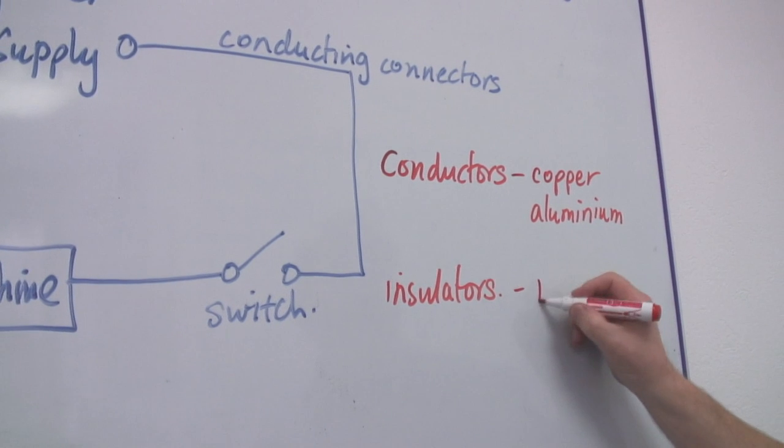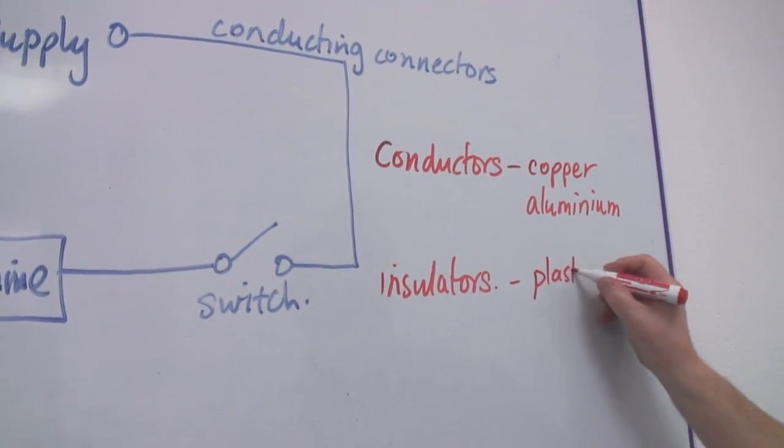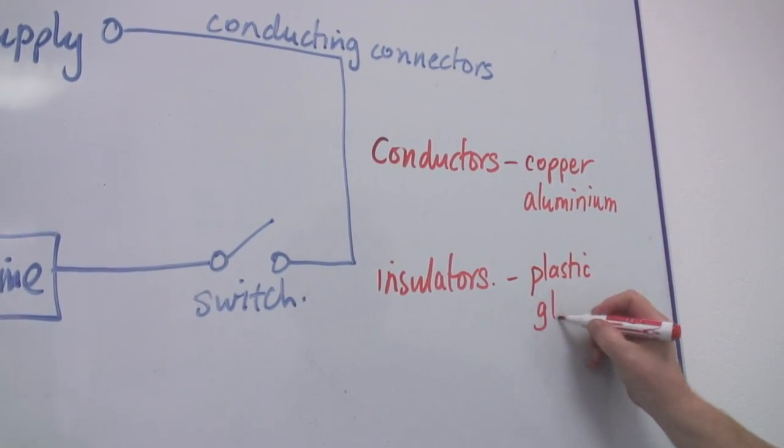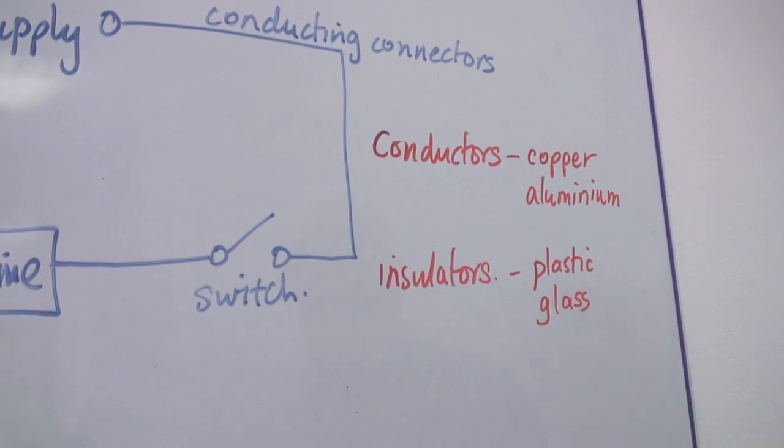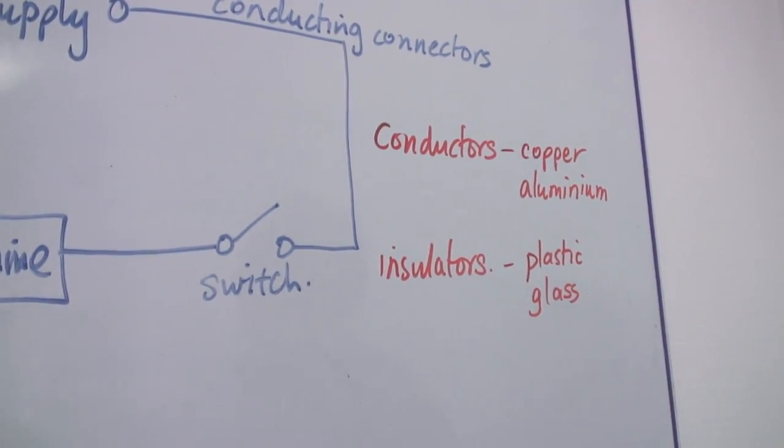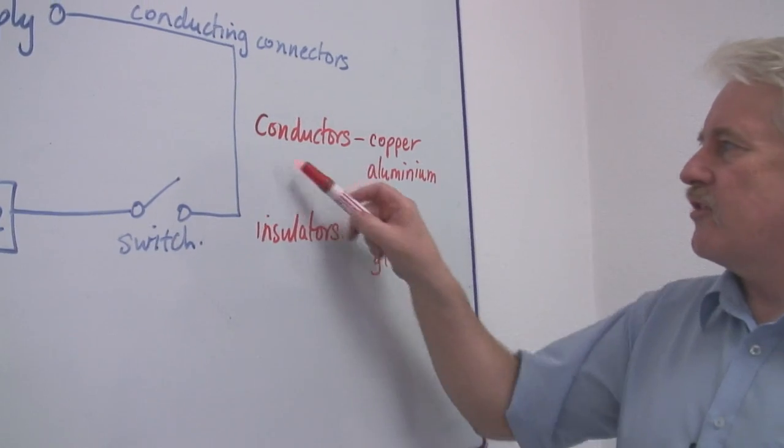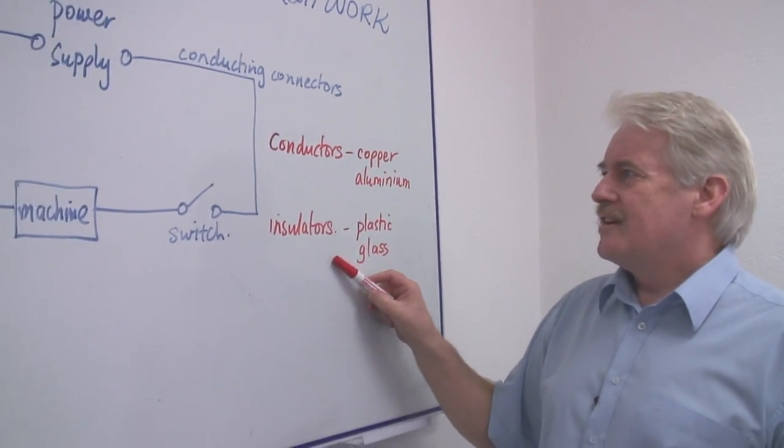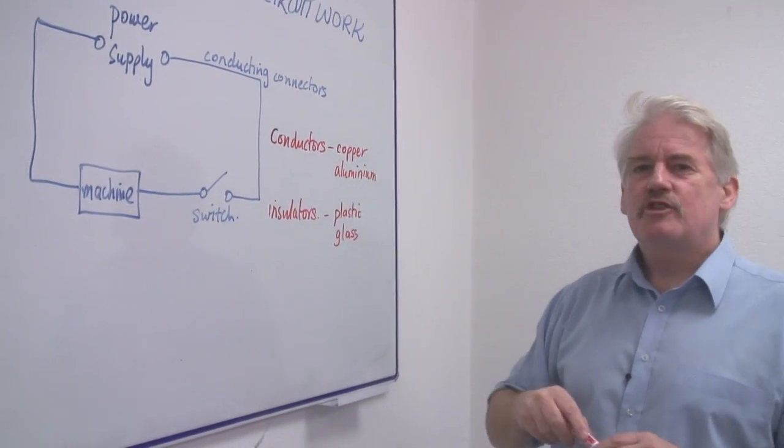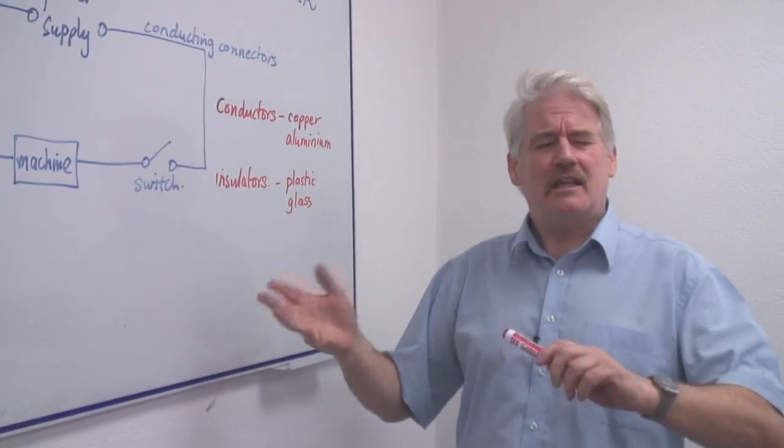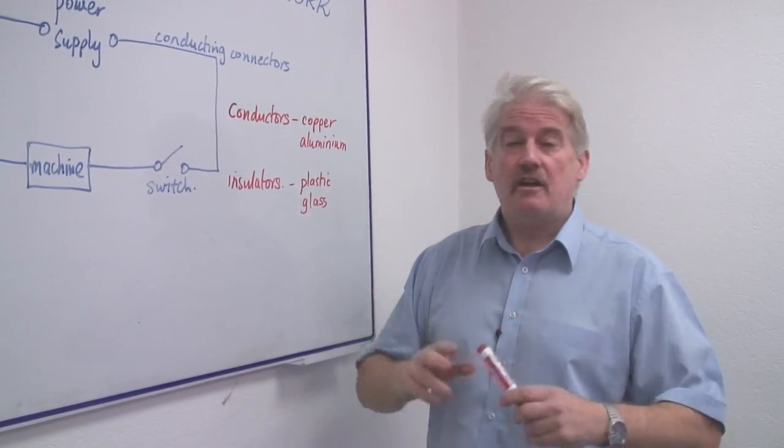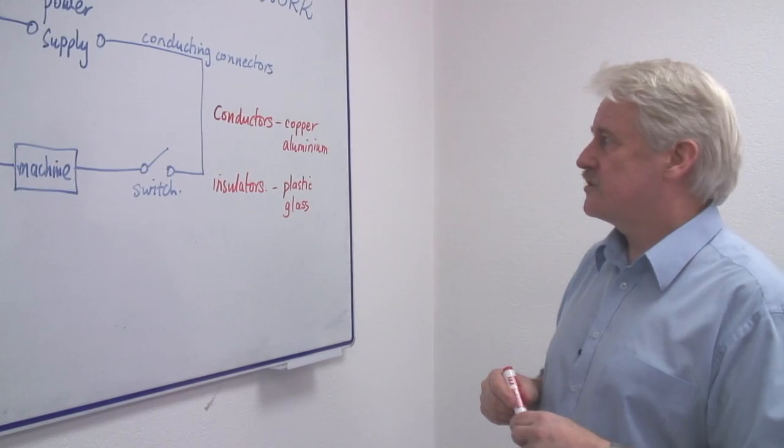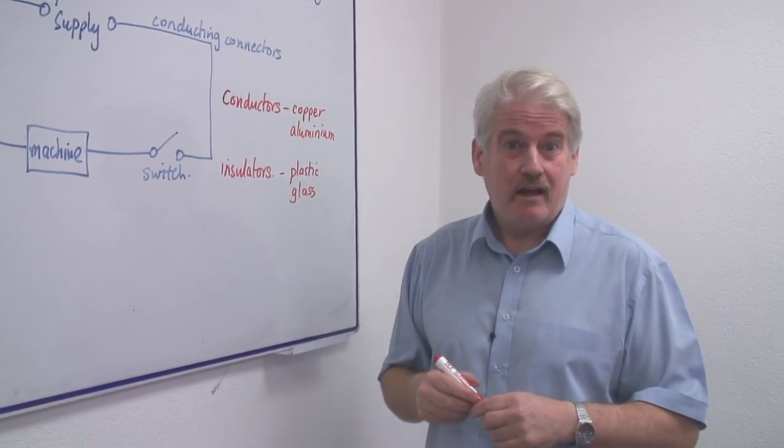Insulators are typically things like plastics, and glass is also an insulator. And in fact, many things, although we talk about conductors and insulators, many things are halfway between the two, and some partly conduct and conduct better than others. One of the best conductors, of course, is silver, actually, as a metal.